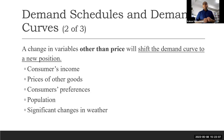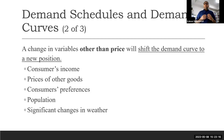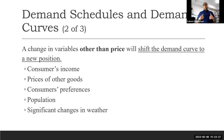The first determinant is consumer income. If income increases, the consumer buys more of that good — demand for that good increases — and the curve shifts to the right. If consumer income decreases, the demand curve shifts to the left.